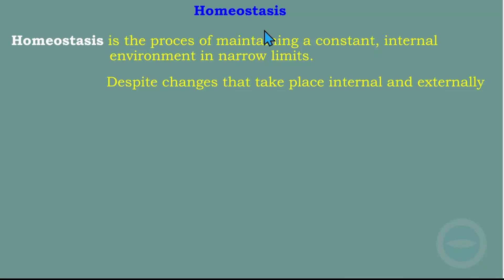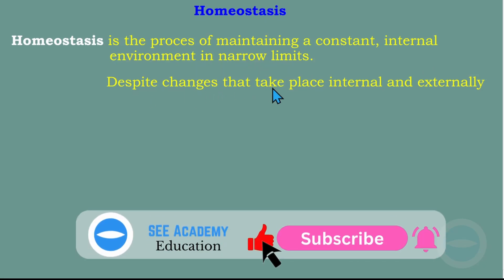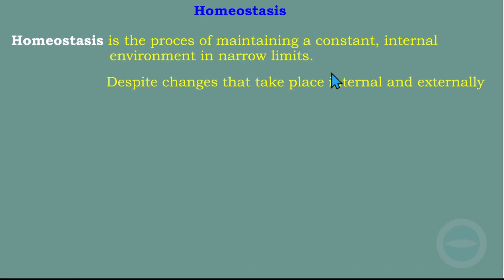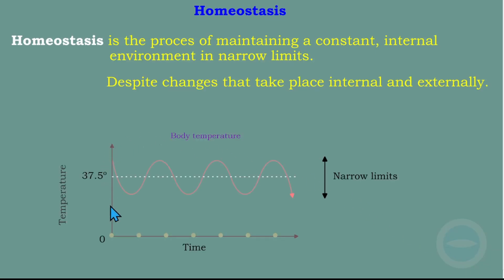First of all, let me define what homeostasis is. Homeostasis is the process of maintaining a constant internal environment within narrow limits, despite the changes that take place internally and externally. For example, here I have a small demonstration with this graph. This graph is for temperature balance. The temperature in our body stands around 37.5 degrees.